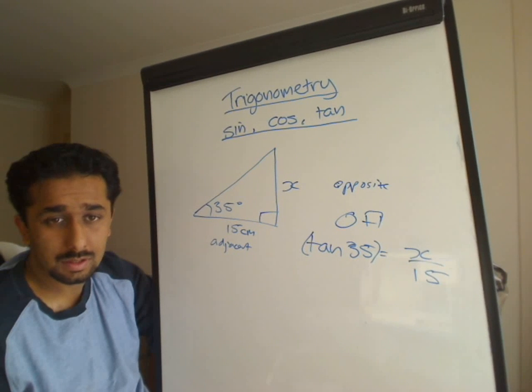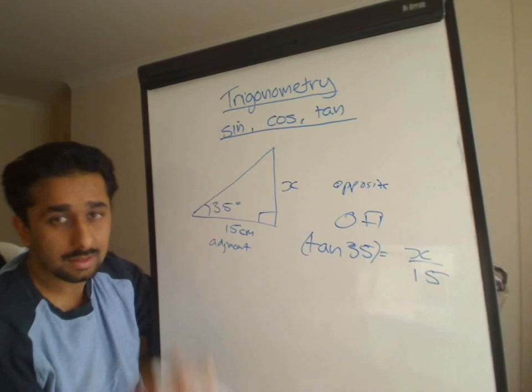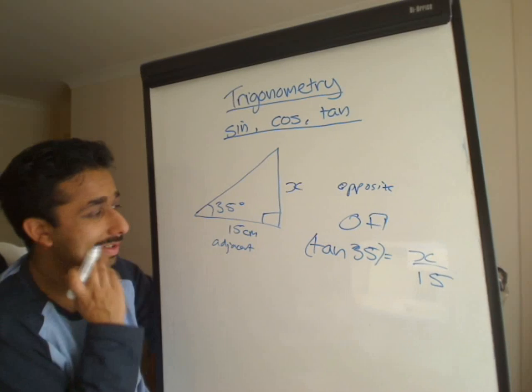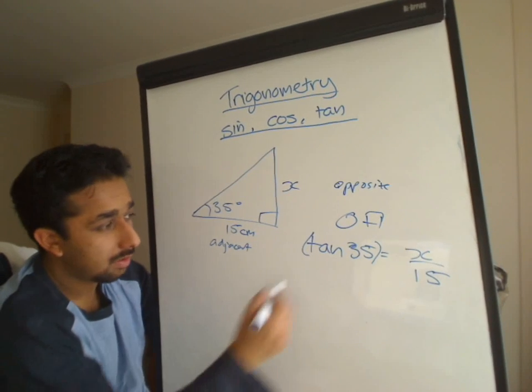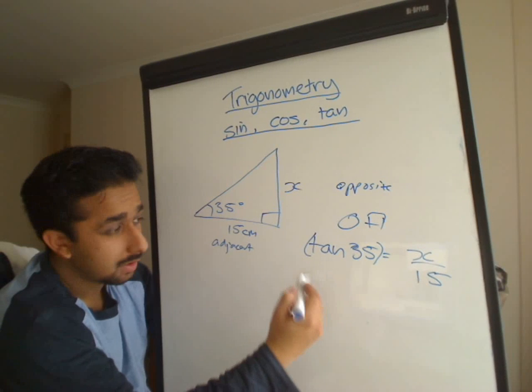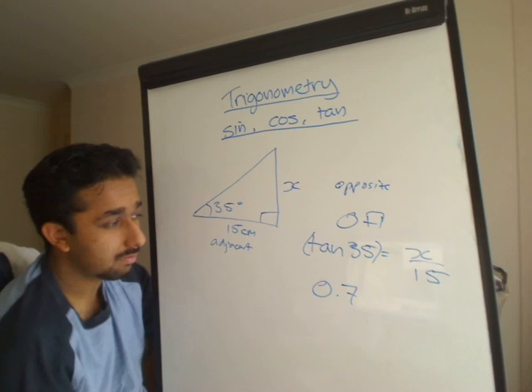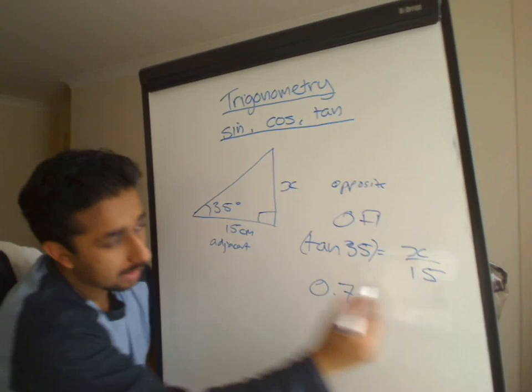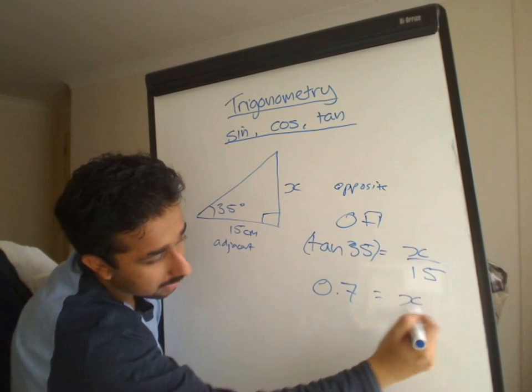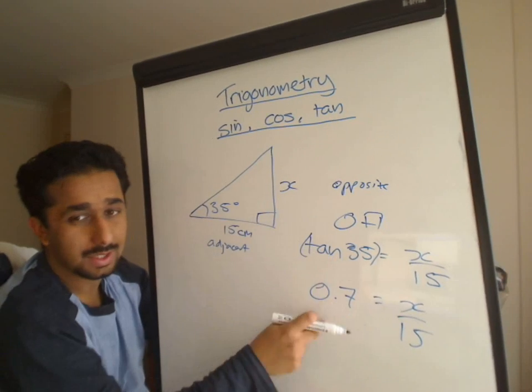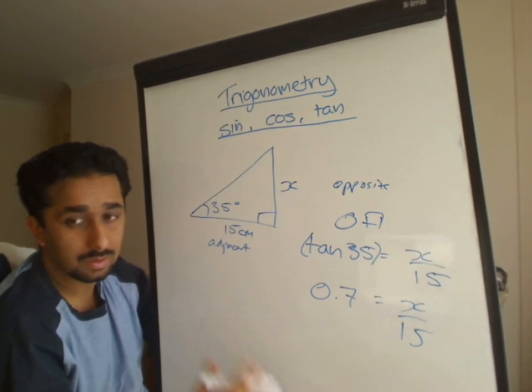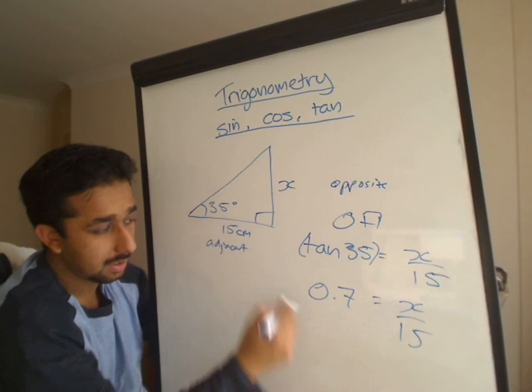So you write the other way around. Tan 35 is roughly 0.7. So instead of that, I'm writing that. So it's still equal to x divided by 15. I don't actually calculate what that is at this stage. I wouldn't normally do it, but I think it makes it easier to understand if you're new to it.